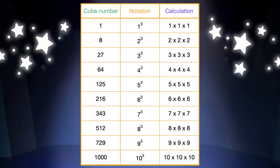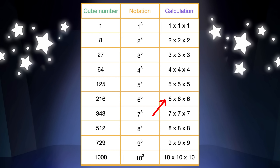Next is 125. It is five cube, or five times five times five. Next is 216. It is six cube, or six times six times six. Next is 343. It is seven cube, or seven times seven times seven.